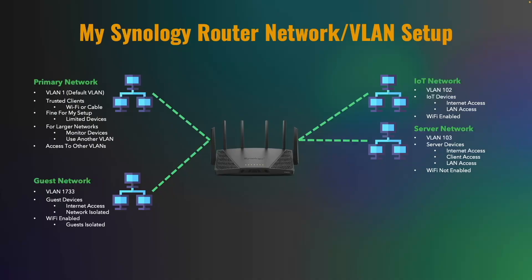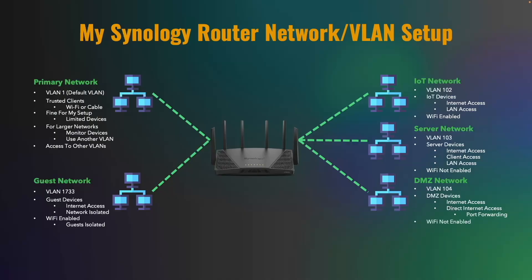The last network I'm creating is a DMZ network which I'll assign VLAN ID 104. Systems in the DMZ network will have internet access and will be the only systems in my network that can be accessed directly from the internet using port forwarding. Wi-Fi also won't be enabled here because the DMZ devices will be connected via ethernet.